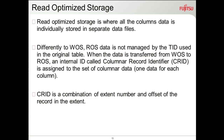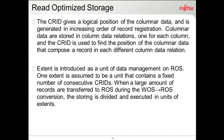CRID is just a combination of extent number and offset. An extent is a collection of pages — a fixed set of records. If there are many records in a table, the number of extents increases. The CRID is just a logical position of columnar data, containing the extent number and the offset.